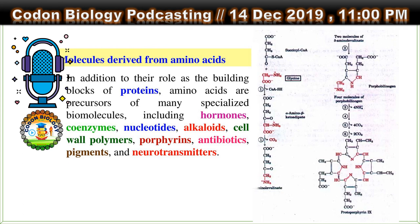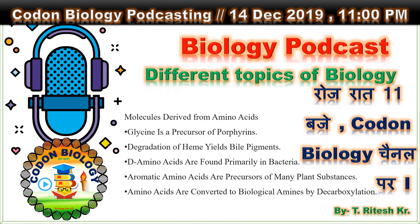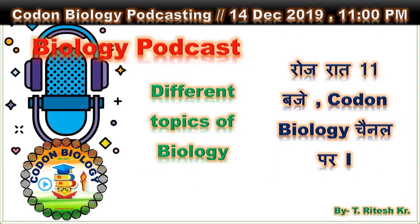We will see the precursor amino acids of each of these biomolecules. The precursor of auxin is tryptophan. The precursor of catecholamines — which includes dopamine, norepinephrine, and epinephrine — is tyrosine. The precursor of GABA (gamma-aminobutyrate) is glutamate.